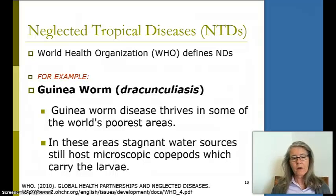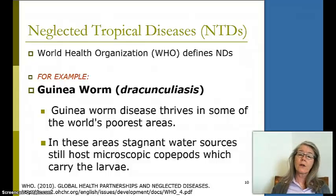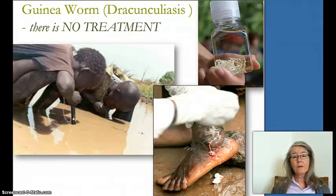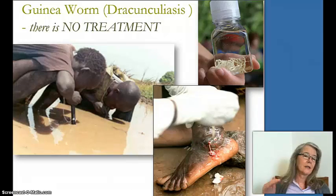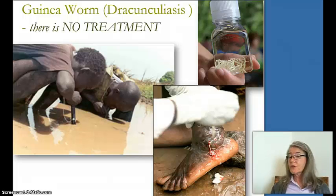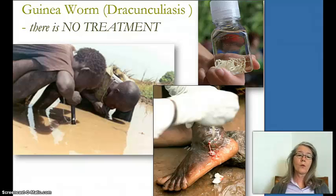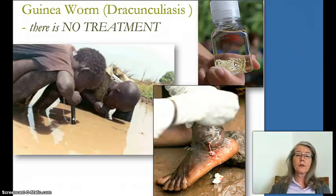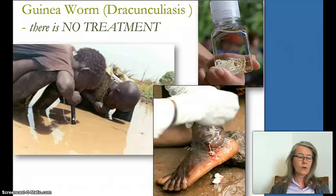Guinea worm is found only in the very poorest areas, where stagnant water sources host the copepod carrying the larvae. Children out in the field drink directly from muddy ponds — this is how the cycle continues, as they're reinfected by ingesting the copepod. You can see from this picture that the removed guinea worm is really long — like a thread-like thing coming out of a person's ulcer on the side of their leg.